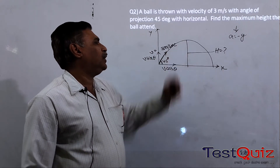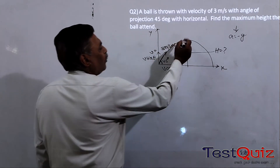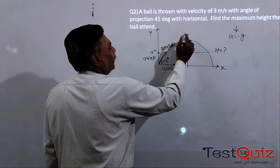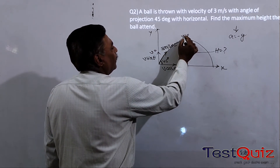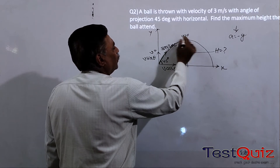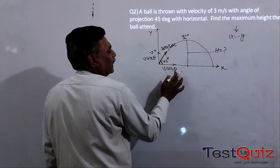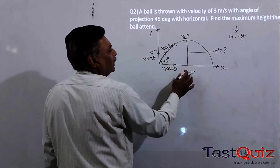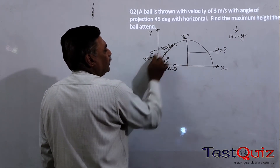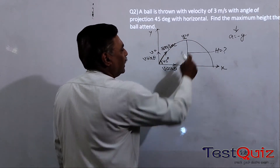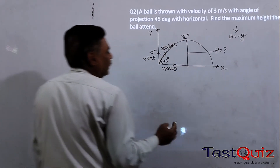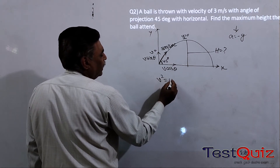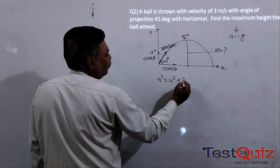At the top of the trajectory, the vertical velocity is zero. We have the vertical component and the horizontal component. The vertical component is V sin θ and the horizontal component is V cos θ. To find the height, we use the equation v² equals u² plus 2as.